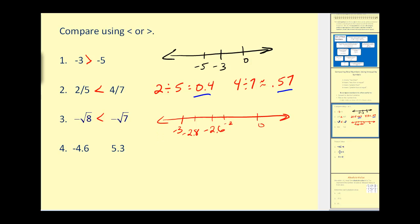And lastly, this one's pretty straightforward. A positive number is always larger than a negative number. So we know that negative 4.6 is less than 5.3. So I highly recommend converting to decimal form and then using the number line to determine which number is less than or greater than the other.